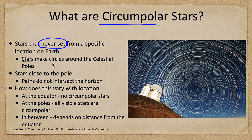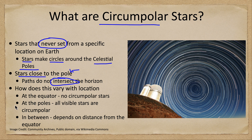Stars will make circles around the celestial poles. The pole is the pivot point, located at the very center of all these circles in our image. When we look at stars that are close to the pole, note how their circles just go around and never intersect the horizon — they don't cross the horizon at all, which means they are always up. No matter when you look at them, they will always be there in the sky, and those are the stars we call circumpolar.